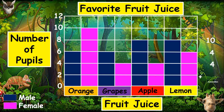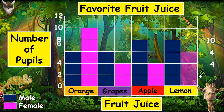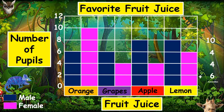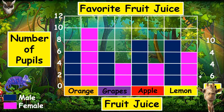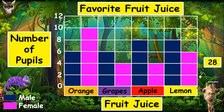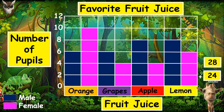Six females like lemon, with a total of 24 females. If there are 28 males and 24 females, therefore the number of pupils who joined the survey are 52.